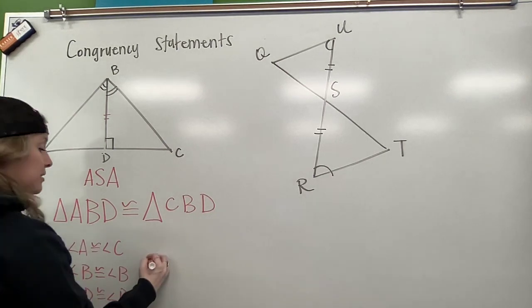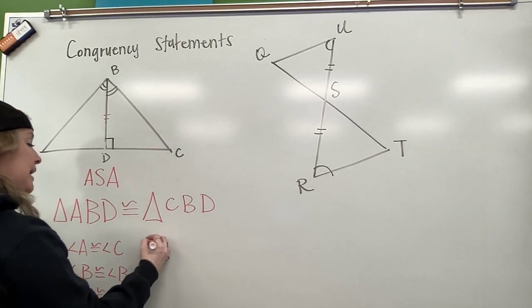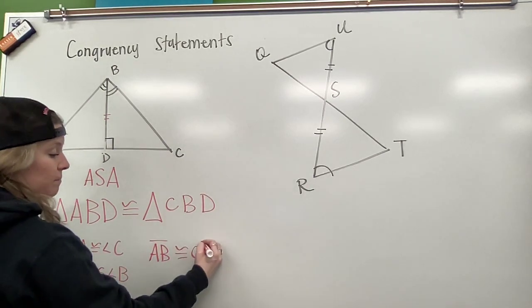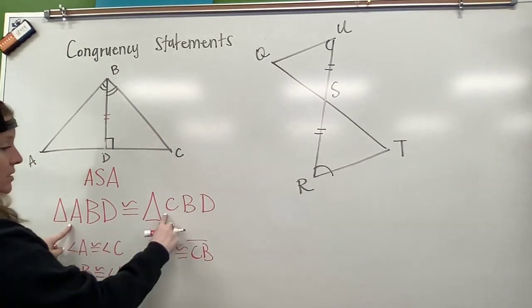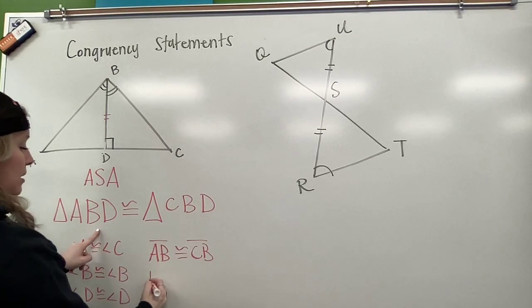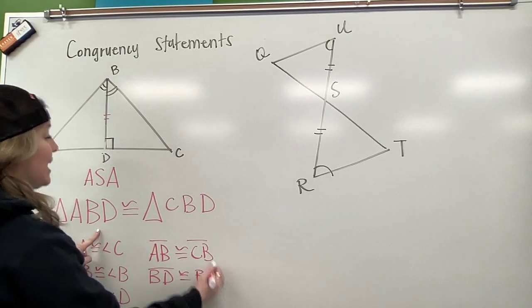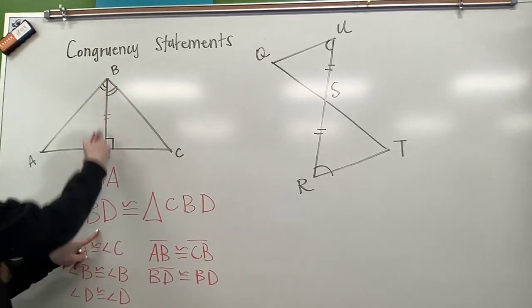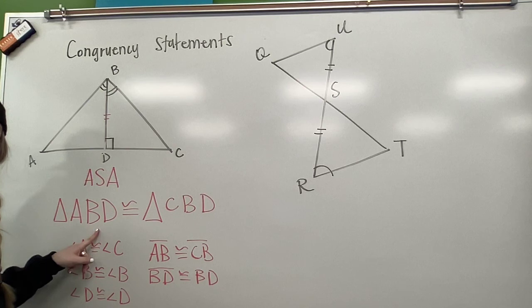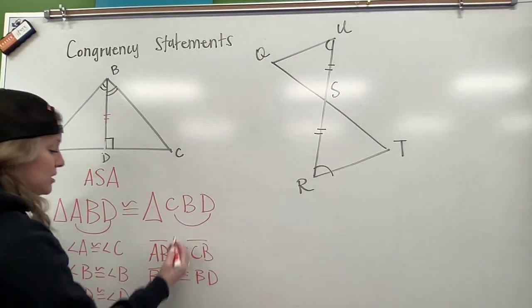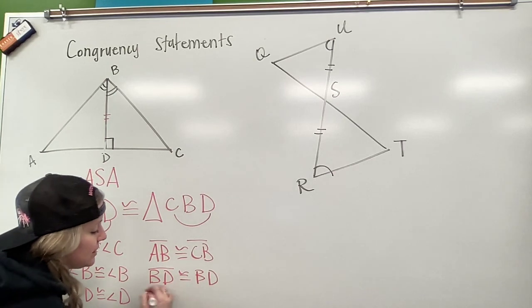This is also telling me that side AB is congruent to side CB. Then I know BD is congruent to BD. That's how we knew that they were congruent because we knew that this side was shared by both triangles. And then side DA is congruent to side DC.